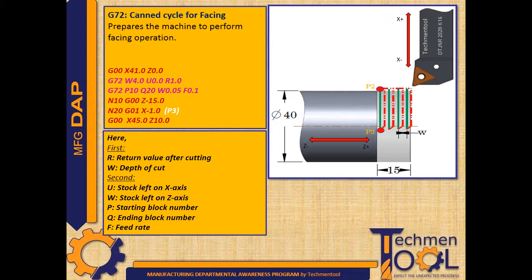Then again, tool movement follows G72 facing cycle along with P, Q, W and F values. U is the stock left on X axis, W is the stock left on Z axis, P is the starting block number, Q is the ending block number, and F is the feed rate.